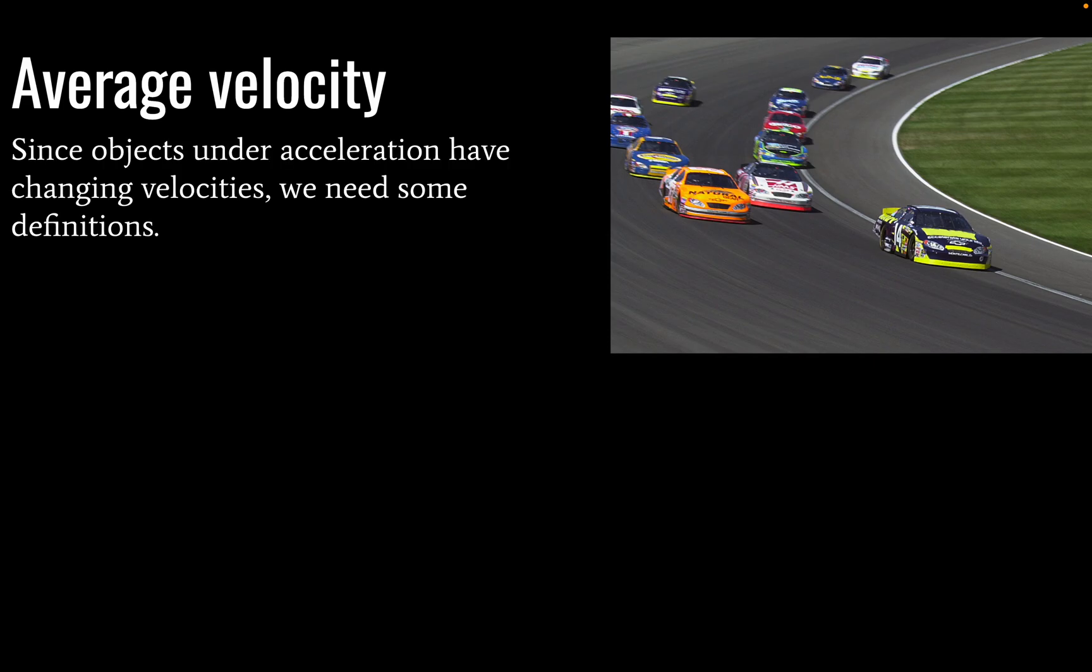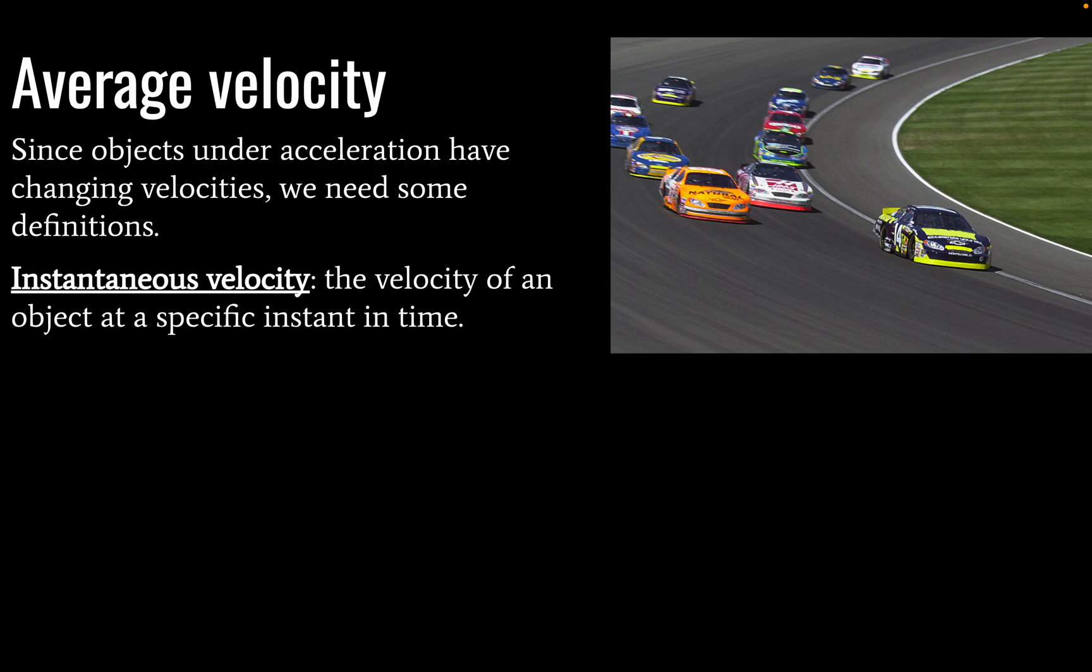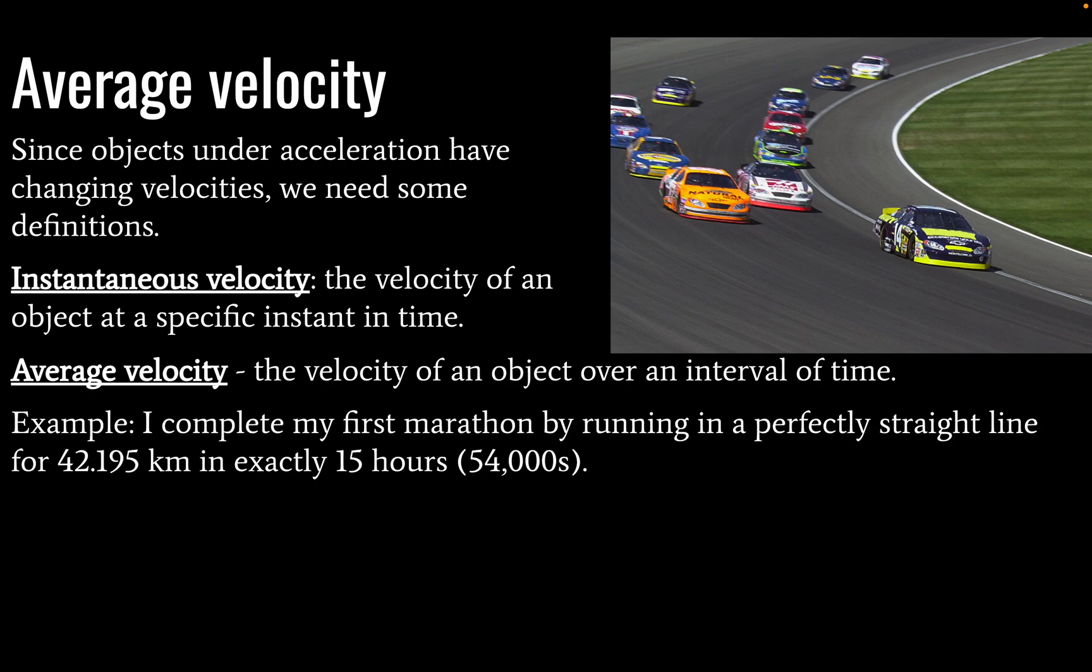Average velocity is defined as, well, first let's start with instantaneous velocity. So instantaneous velocity is defined as the velocity of an object at a specific instant in time, whereas average velocity is defined as the velocity of an object over a longer interval of time.